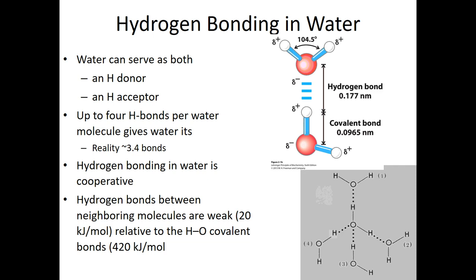Let's look at how two water molecules can hydrogen bond together. One water molecule serves as the proton acceptor and another serves as the proton donor, forming a hydrogen bond between them. Note that this hydrogen bond is actually much longer than a covalent bond, which is evidence that the hydrogen bond is weaker than a covalent bond. So why would we care so much about hydrogen bonding if it's a weaker bond?